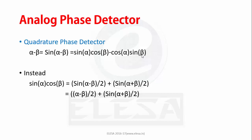Instead of using two multipliers, a more common phase detector uses a single multiplier and a different trigonometric identity: sin(α)cos(β) = [sin(α-β)]/2 + [sin(α+β)]/2.